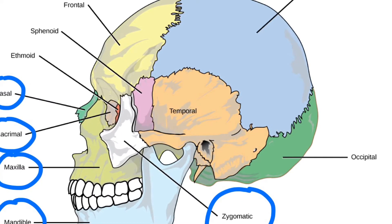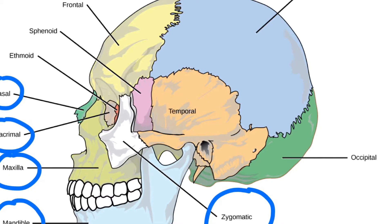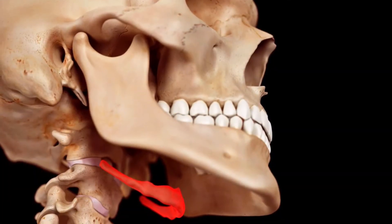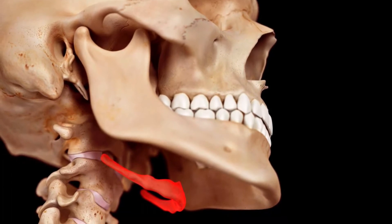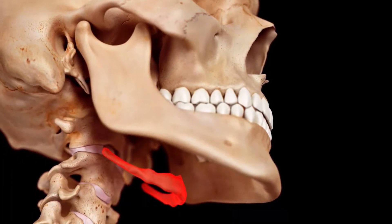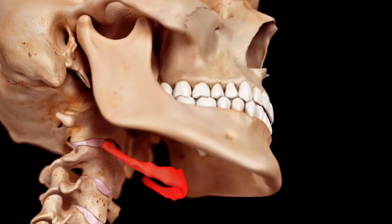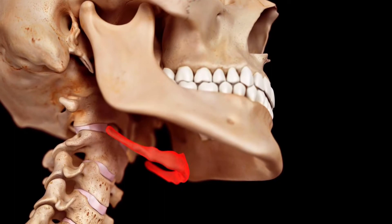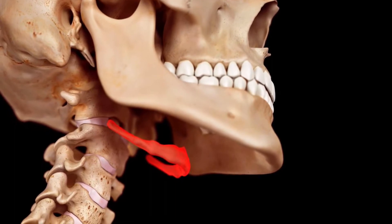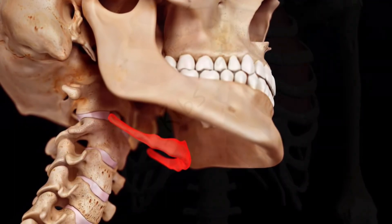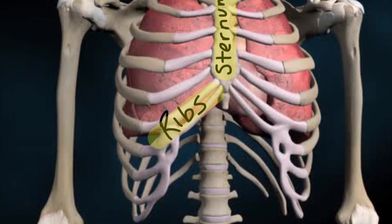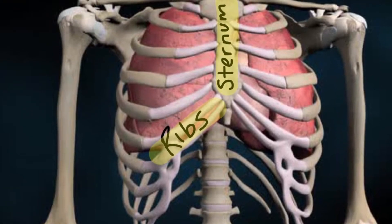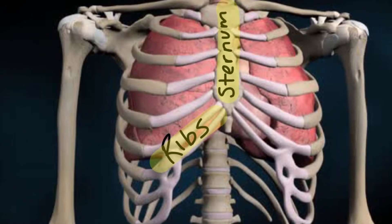Below that is our hyoid — a U-shaped bone that supports our tongue. Without this bone, our tongue would be like a dog's tongue. Below that is our cervical vertebrae, which lives in our neck, and we have seven of them. Next we have our thorax, known as the trunk or the chest, made to protect our organs. It consists of our ribs and our sternum — our breastbone — our scapulas, which are our shoulder blades, and our clavicle, which is our collarbone.